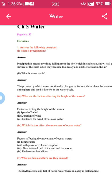Question number three: What are the factors affecting the height of the waves? Factors affecting the height of the waves are: first, speed of wind; second, duration of wind; third, distance the wind blows over water.